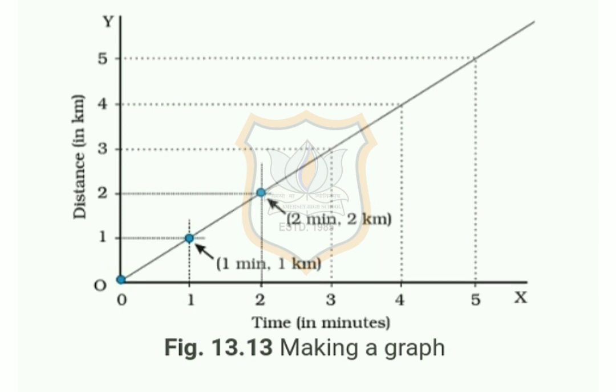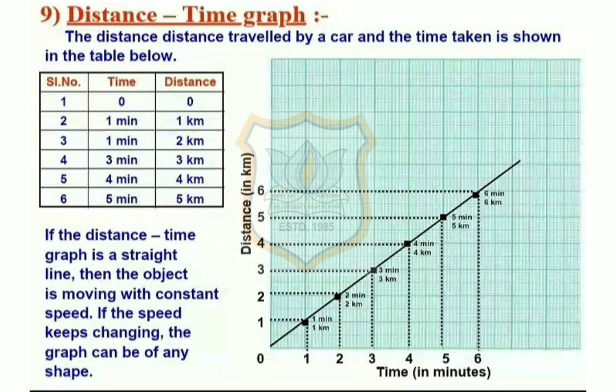If the distance-time graph is a straight line, then the object is moving with constant speed. If the speed keeps changing, the graph can be of any shape.